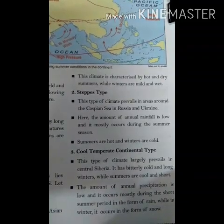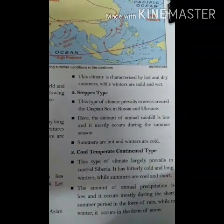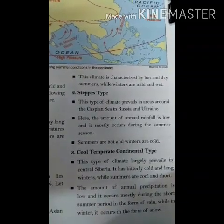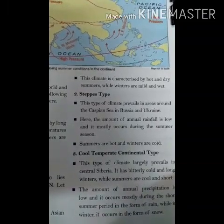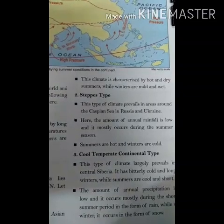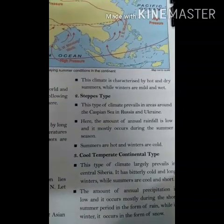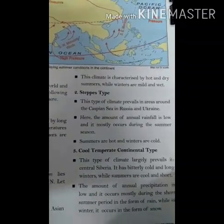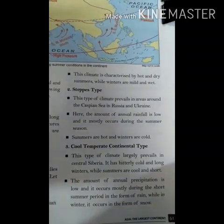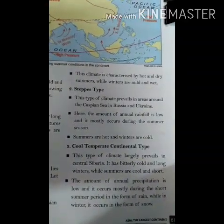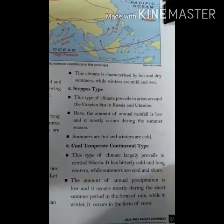Steppe climate is found in the Caspian Sea region in Russia and Ukraine. Rainfall is very low and occurs during the summer season. Summers are very hot and winters are very cold.